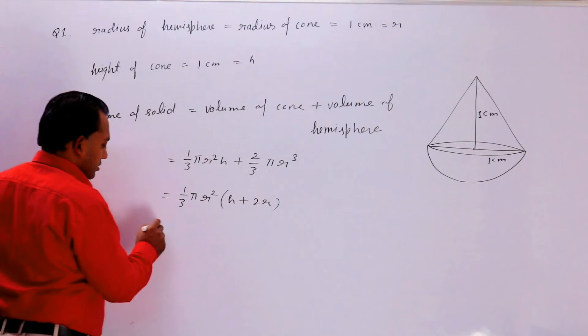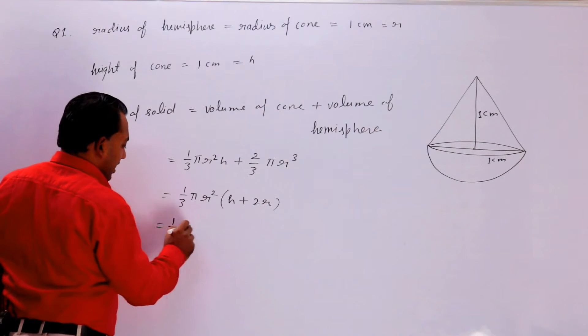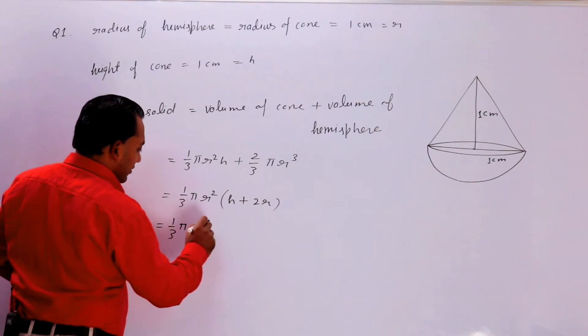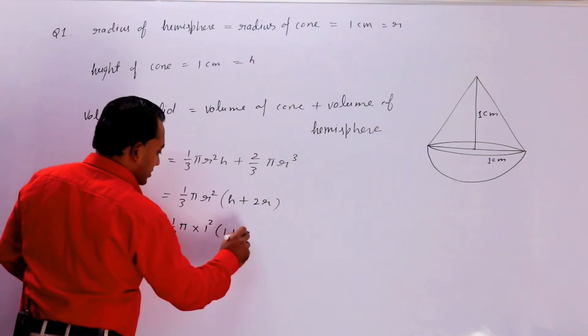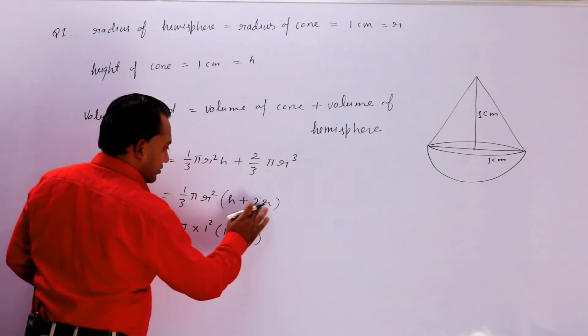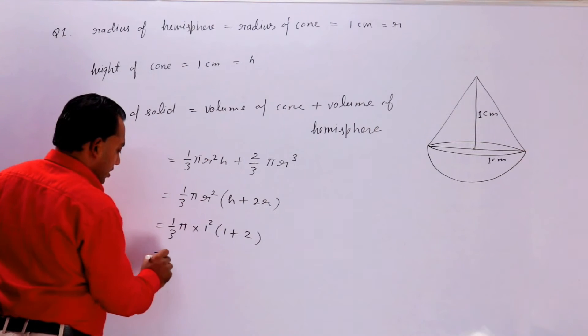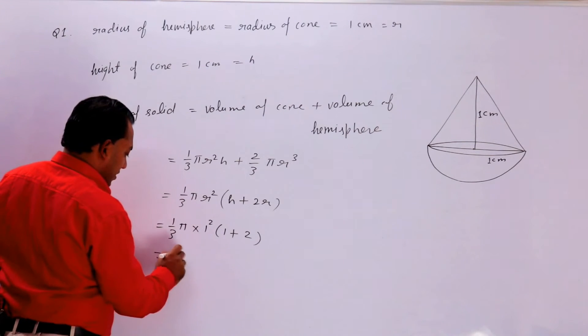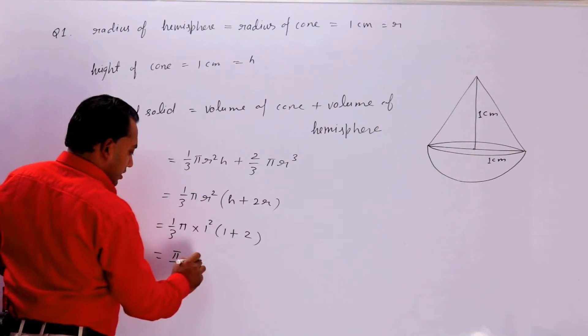Value put कर लिजिए. तो 1 upon 3 π, r की value 1 है तो यह 1 square, 1 plus 2. यह 1 है तो यह 2 into 1. 2 हो जाएगा और यह हो जाएगा π upon 3 into 3.